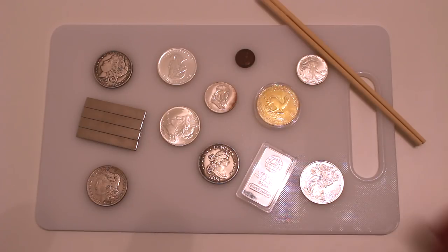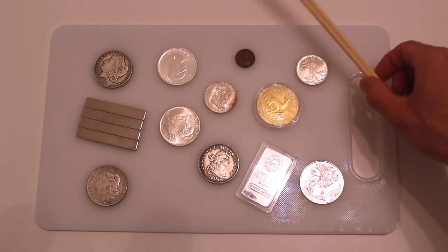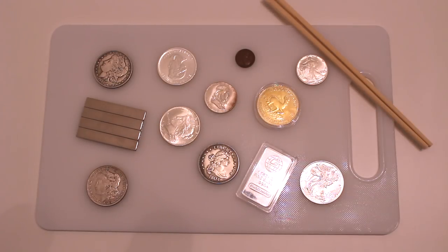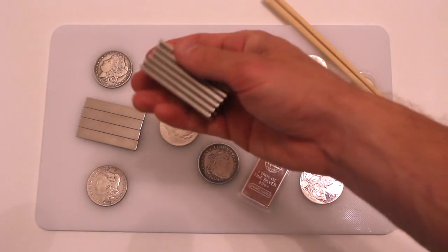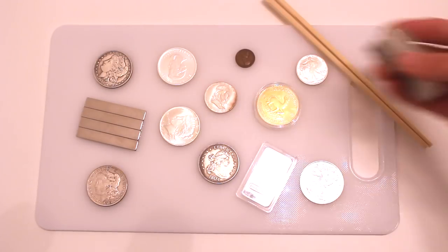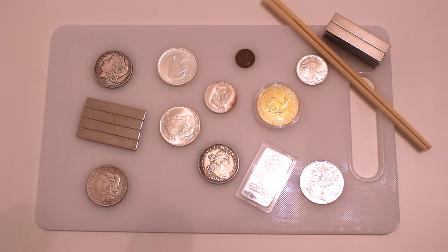What we have here is we've got a cheap plastic cutting board that I bought for $3, a pair of disposable chopsticks that I got with my last sushi order for free. And the only thing that's relatively expensive are these neodymium magnets, which I bought a whole set of. I got a whole bunch of them and all together they were less than $20.